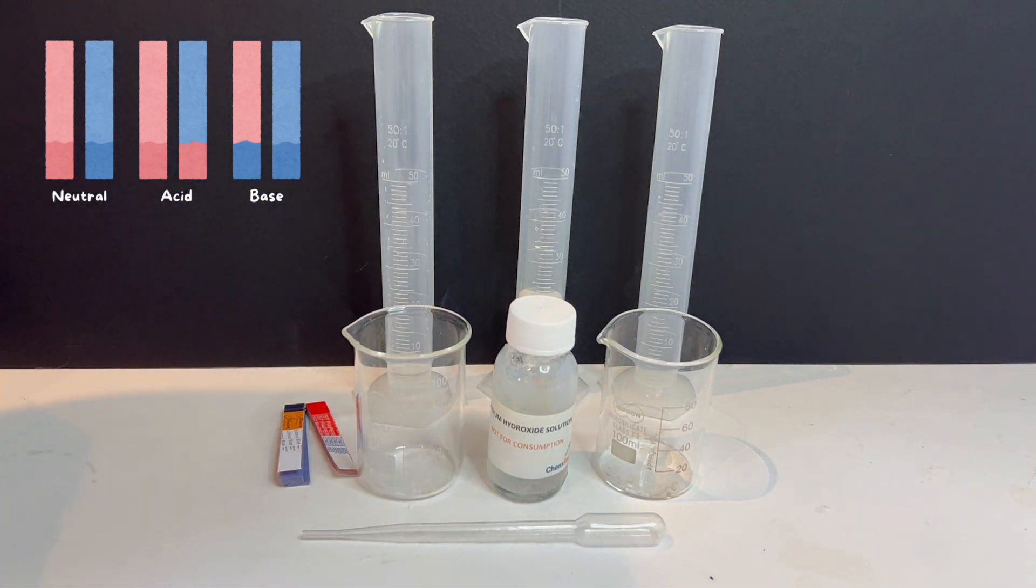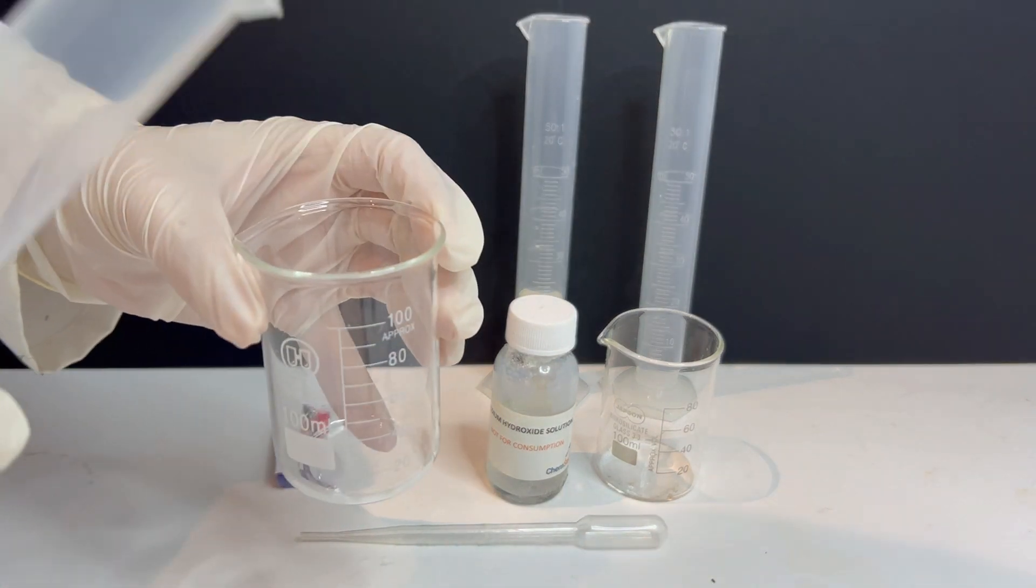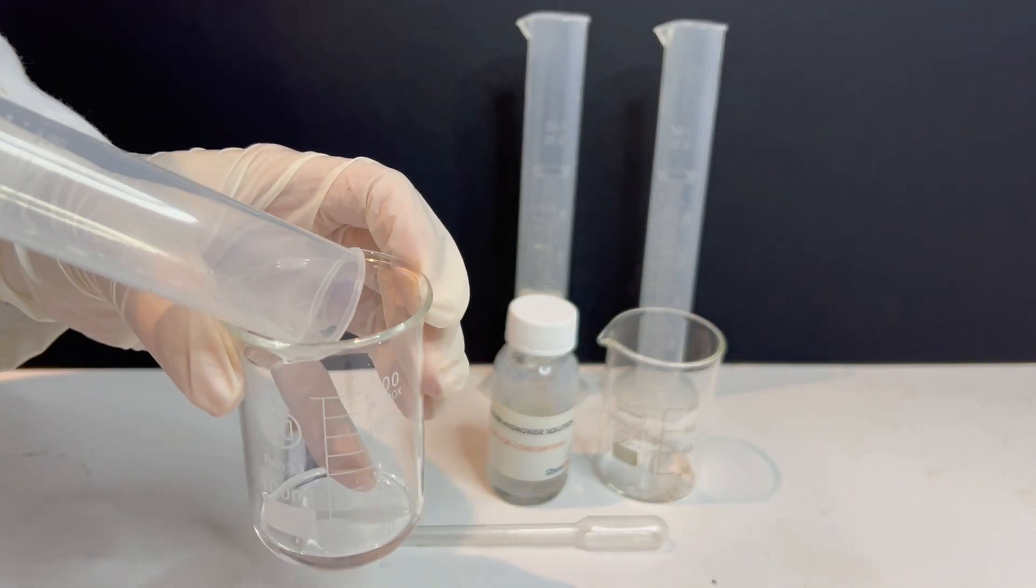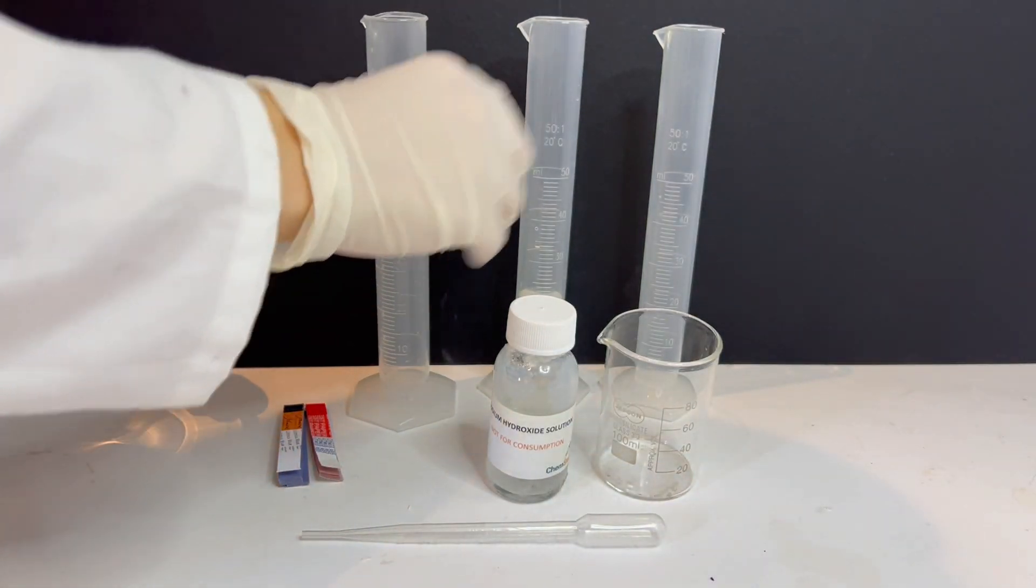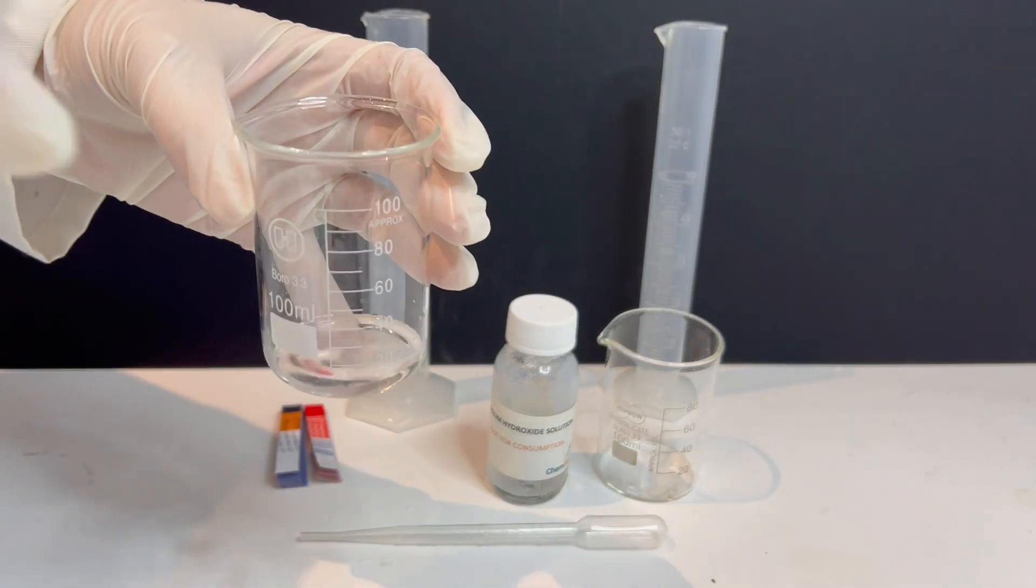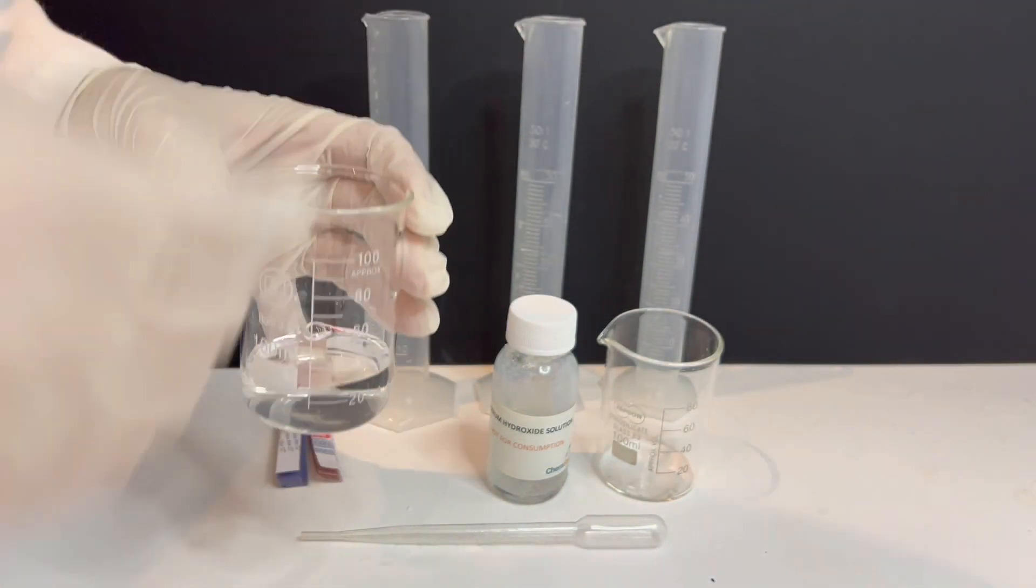First, I pour 5ml of vinegar into a beaker and then I dilute it with about 20ml of water. Diluting the vinegar slightly helps us see the reaction more clearly, while still keeping it acidic.